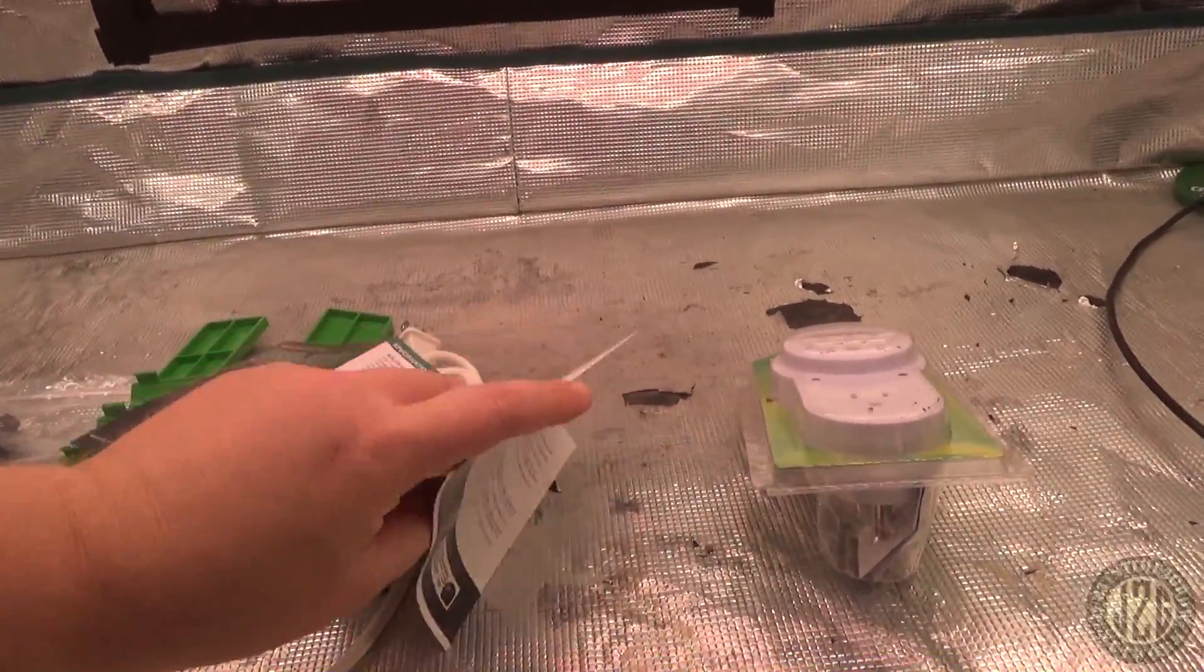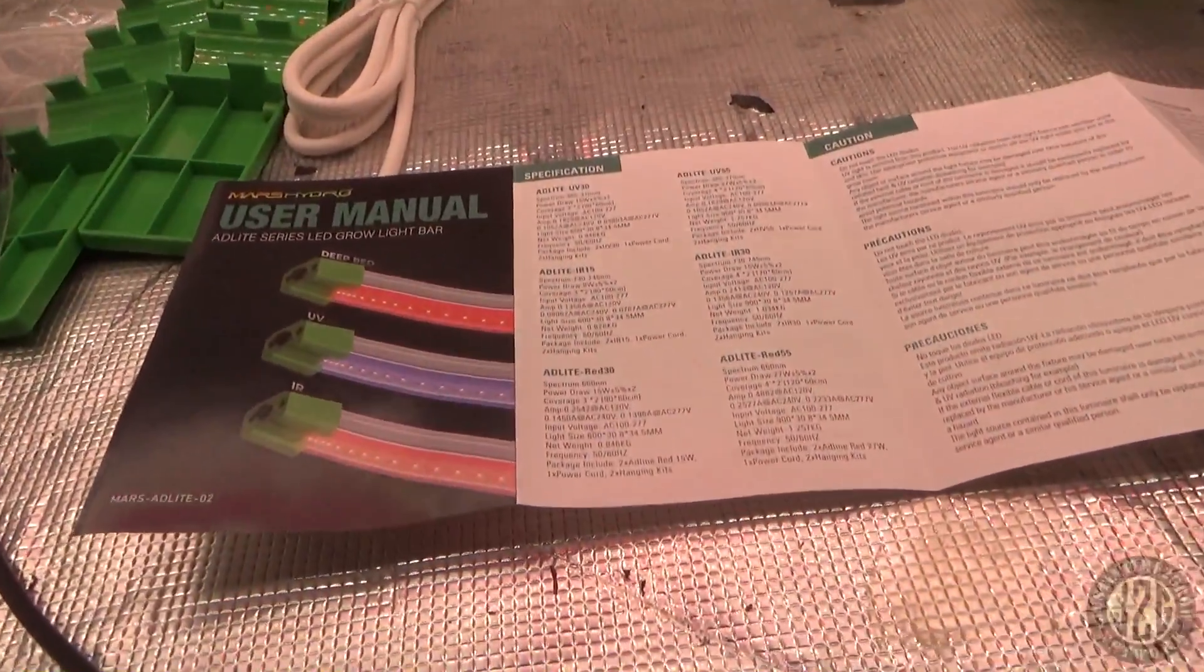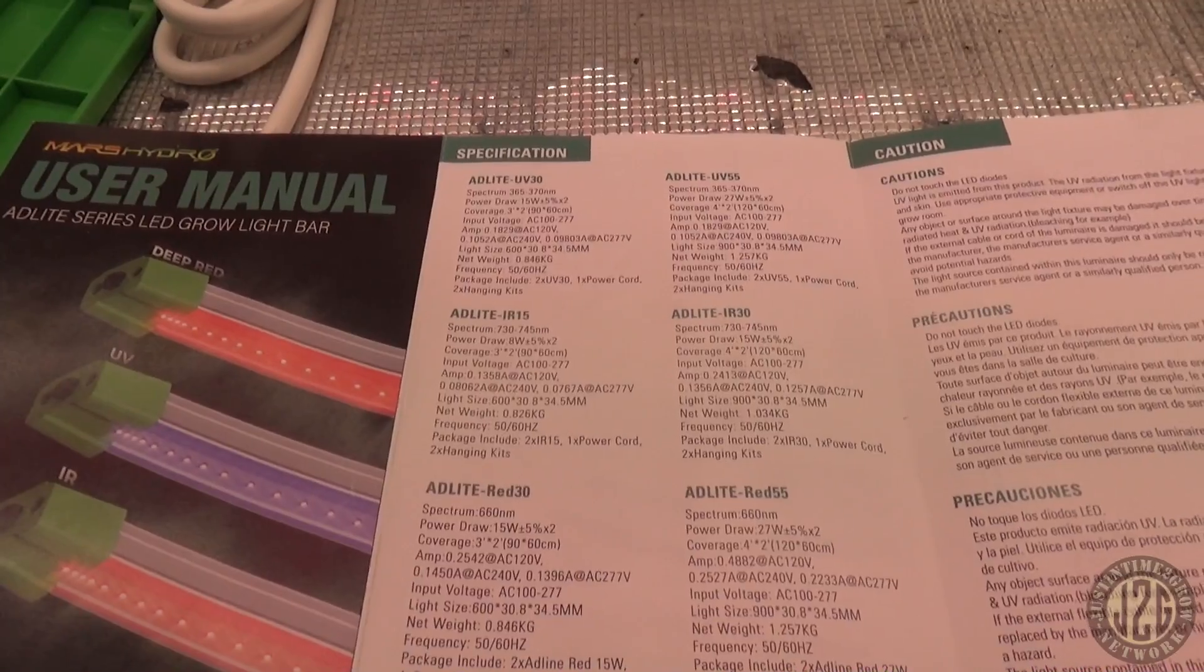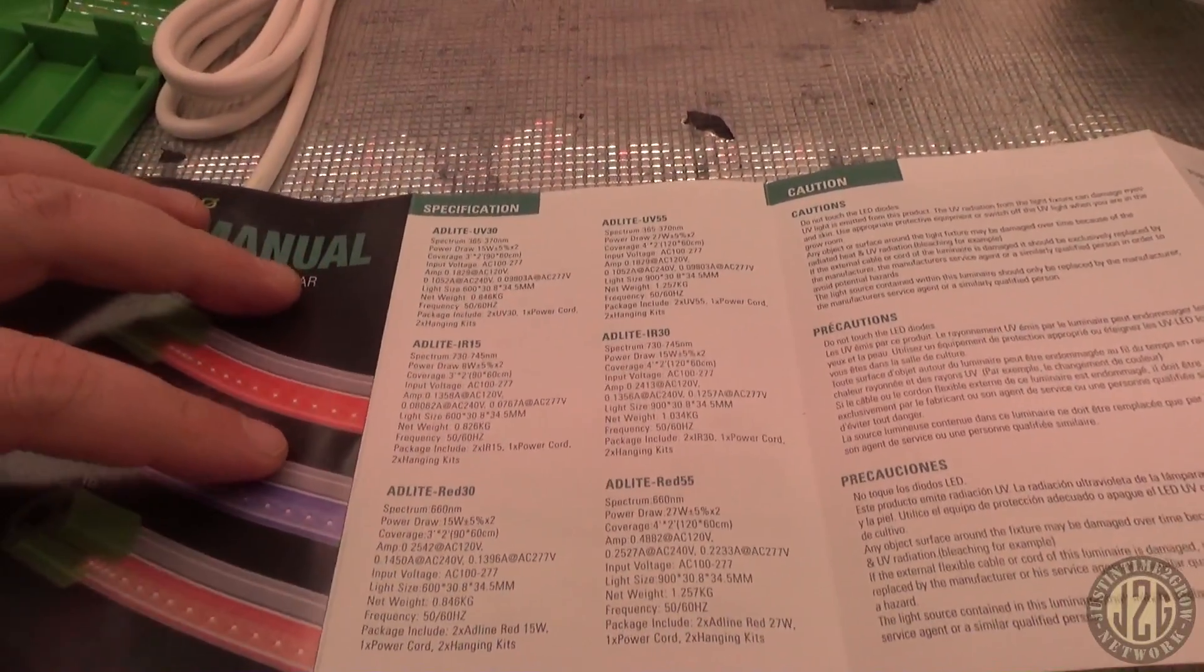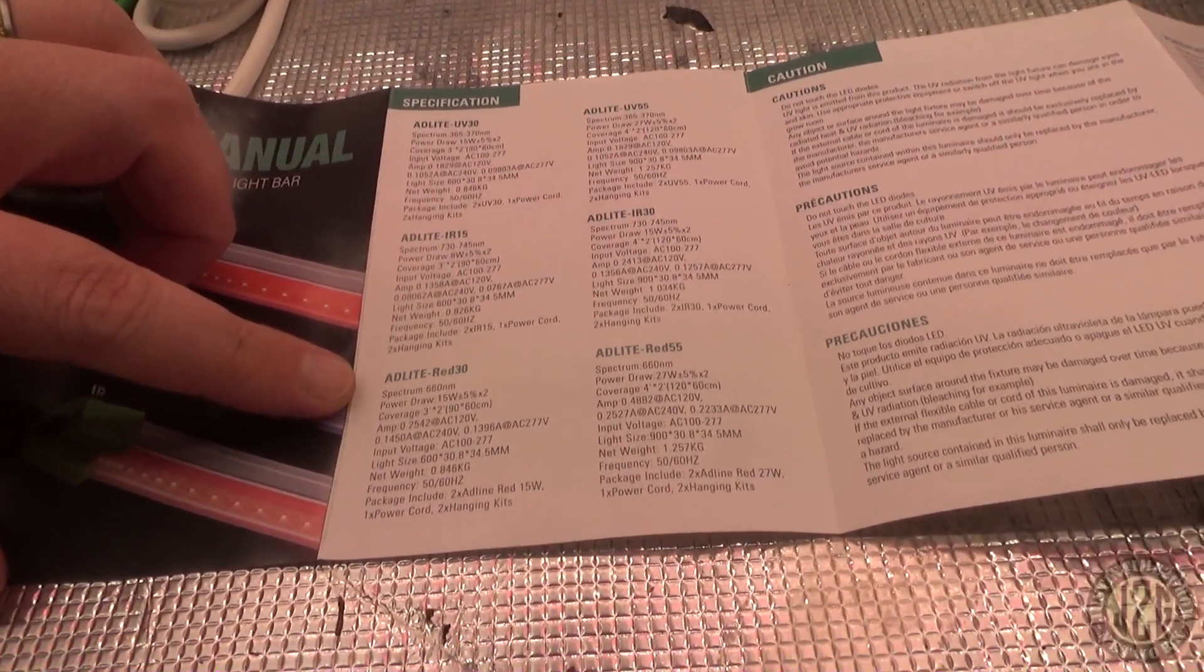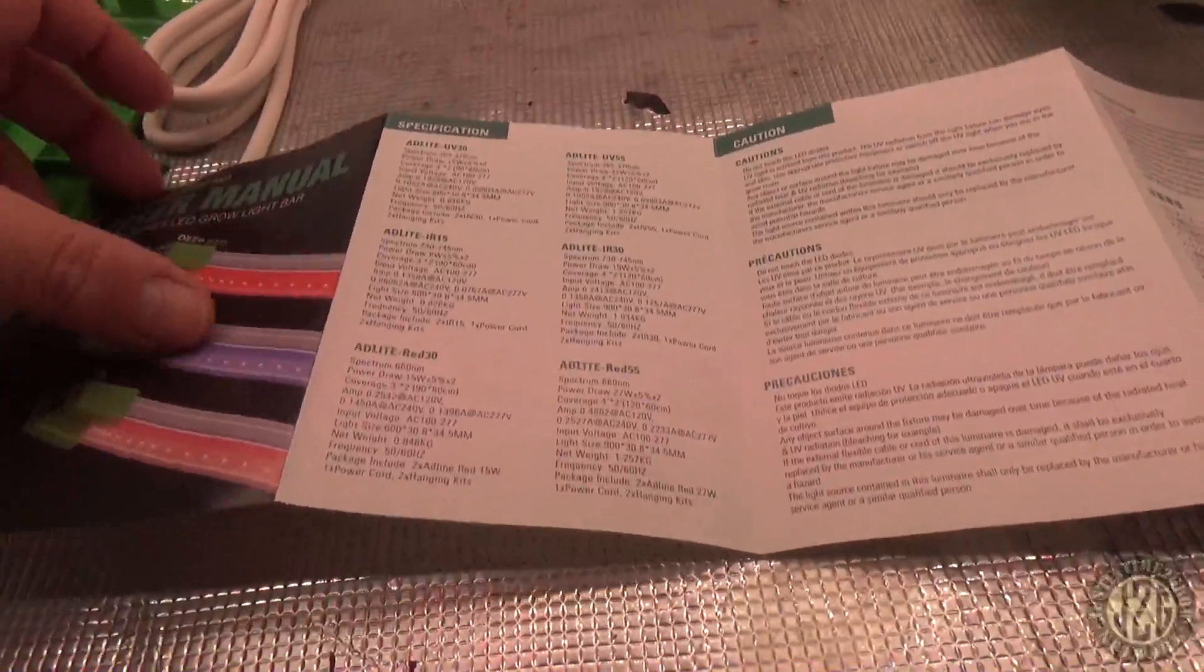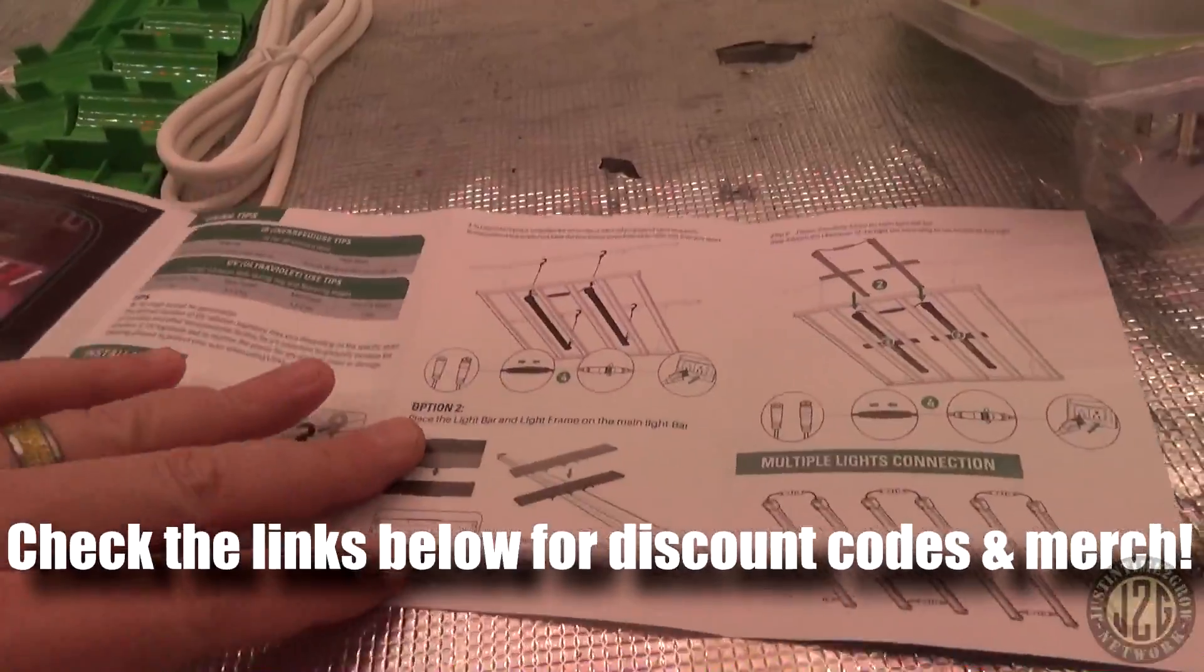You have the little manual here. Not really a whole lot to look at but we will go over it really quickly. So you've got the UV 30 and the UV 55, basically it's two foot and four foot versions of everything. So you've got the IR 15 and the IR 30, the red 30 and the red 55. Two foot and four foot versions. These are the two foot versions that I have here and you get two bars in each one.